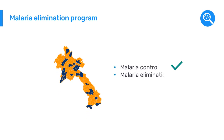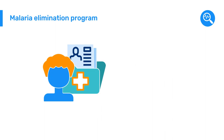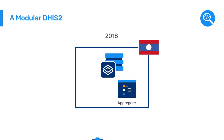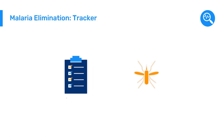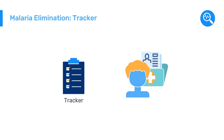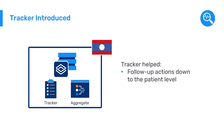Eventually, they decided they needed more specific information on each individual case of malaria detected so they could better track, analyze, and follow up on them. In 2018, they introduced a new module in DHIS-2. Specifically, in malaria elimination settings, Tracker was added to collect detailed information on each individual case of malaria, helping plan and monitor follow-up actions down to the patient level, instead of just interventions based on analysis of regional and national trends.